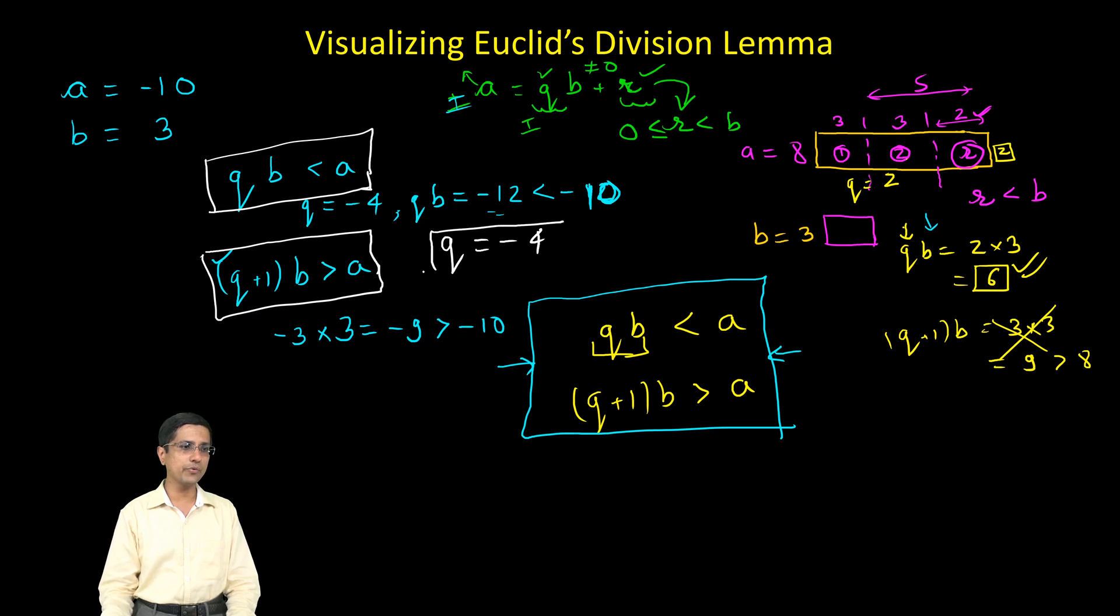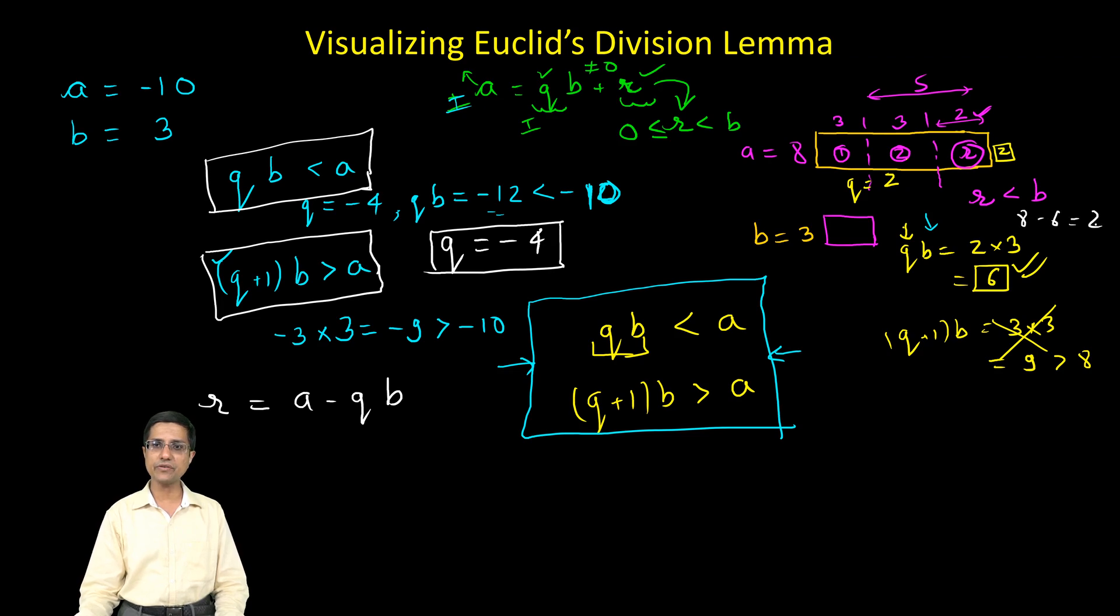So we proceed with that value of Q and now we find the remainder R. R is nothing but A minus QB. That has always been the case. Here also the R is nothing but A minus QB so A is 8 minus 6 which is equal to 2. So R is nothing but A minus QB.